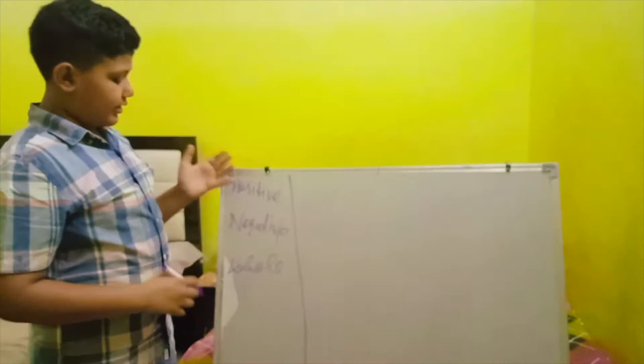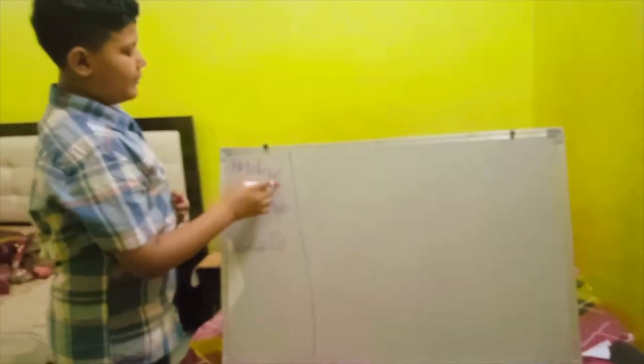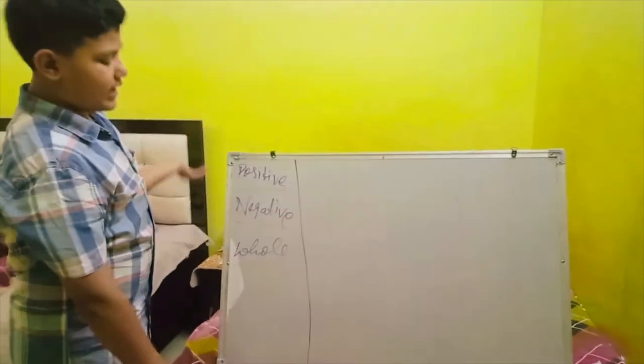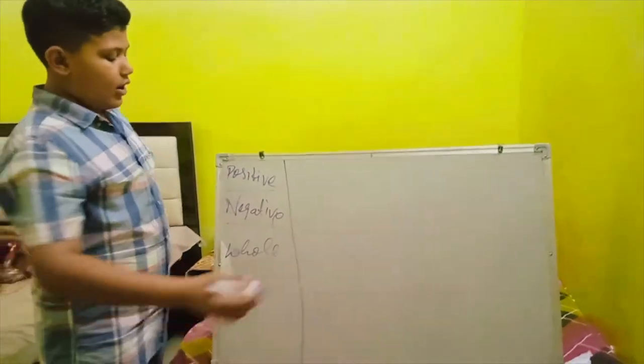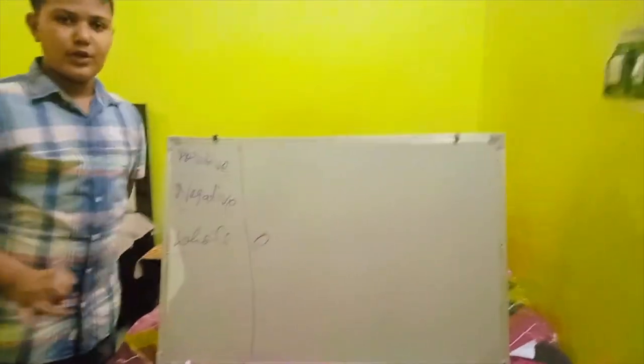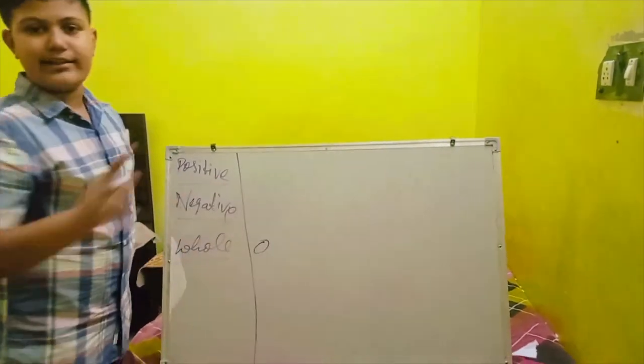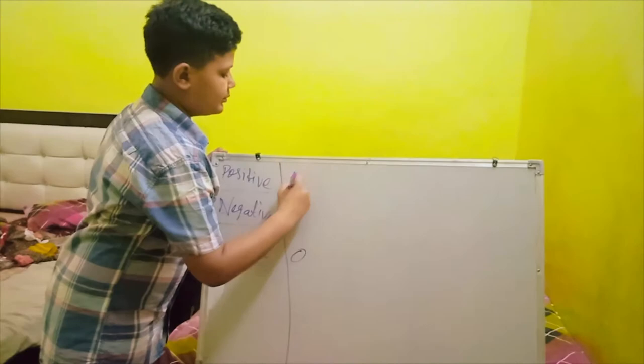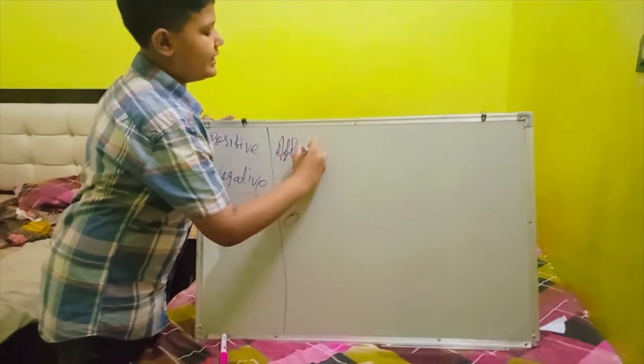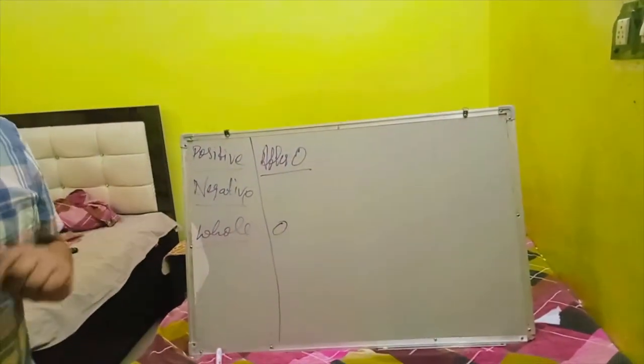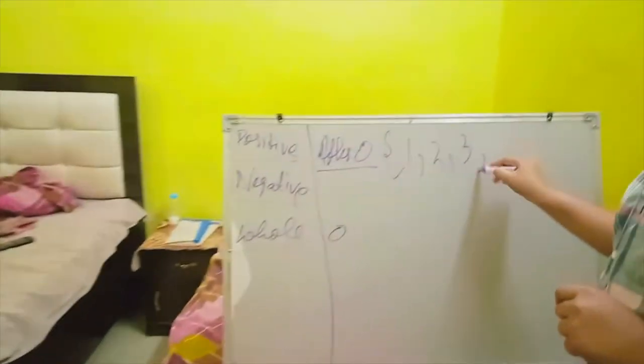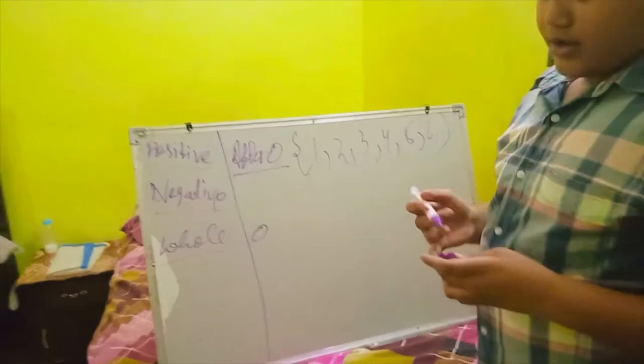Okay, so integers consist of 3 types of numbers: positive, negative, and whole. So I am just going to explain you what are these types of numbers. Whole you know starts from 0, but in integer whole is only 0. Positive after 0, the number that comes after 0.